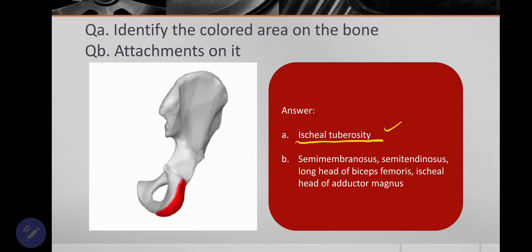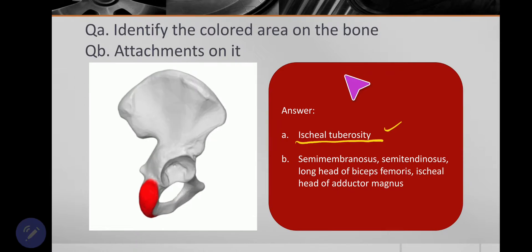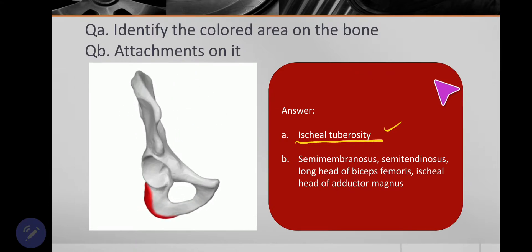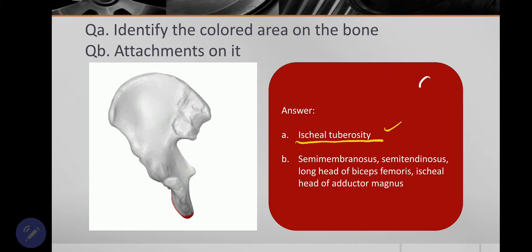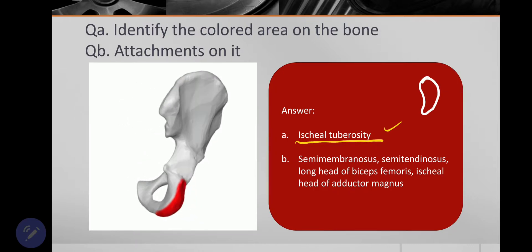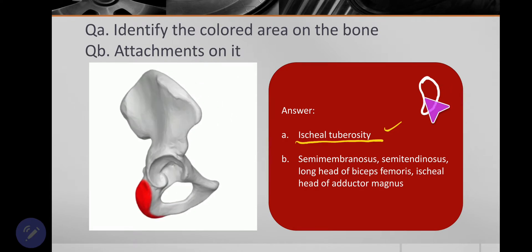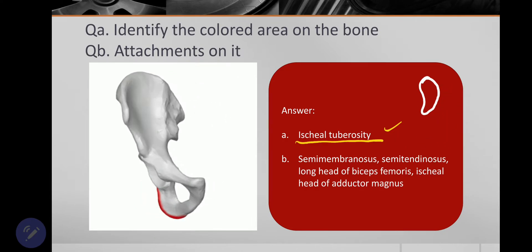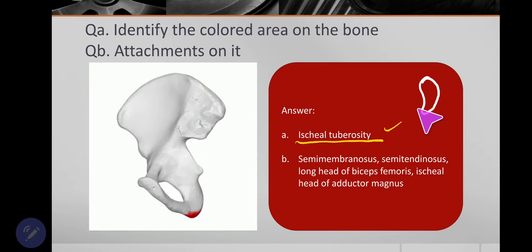Now about attachments. So look here, ischial tuberosity - I am drawing the posterior view of the right ischial tuberosity. So it's a comma-shaped tuberosity with convex outside and concave inside.